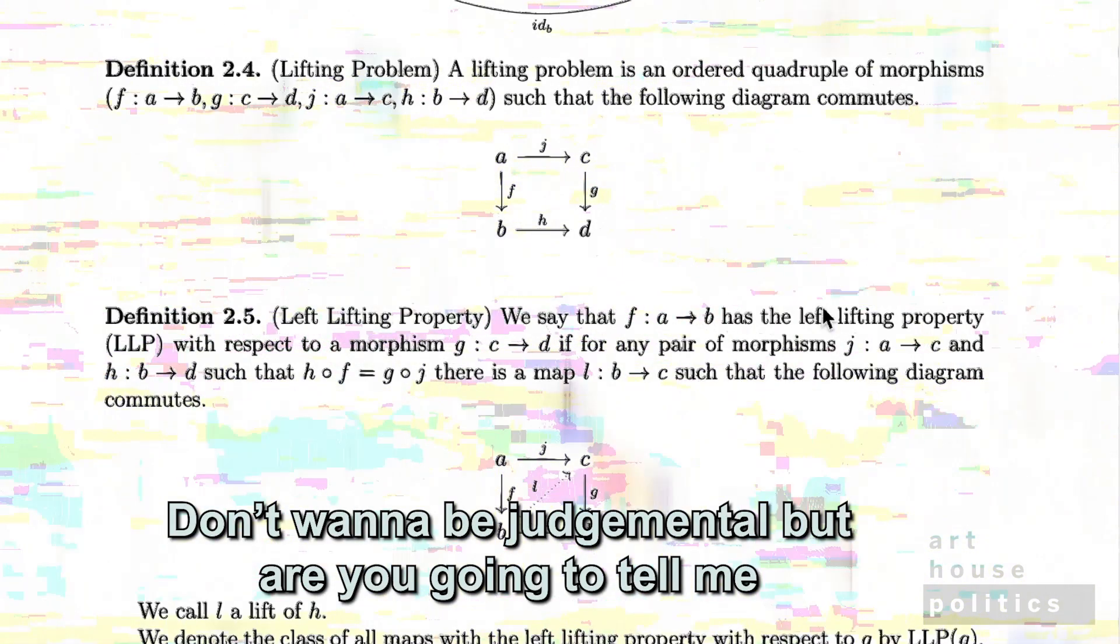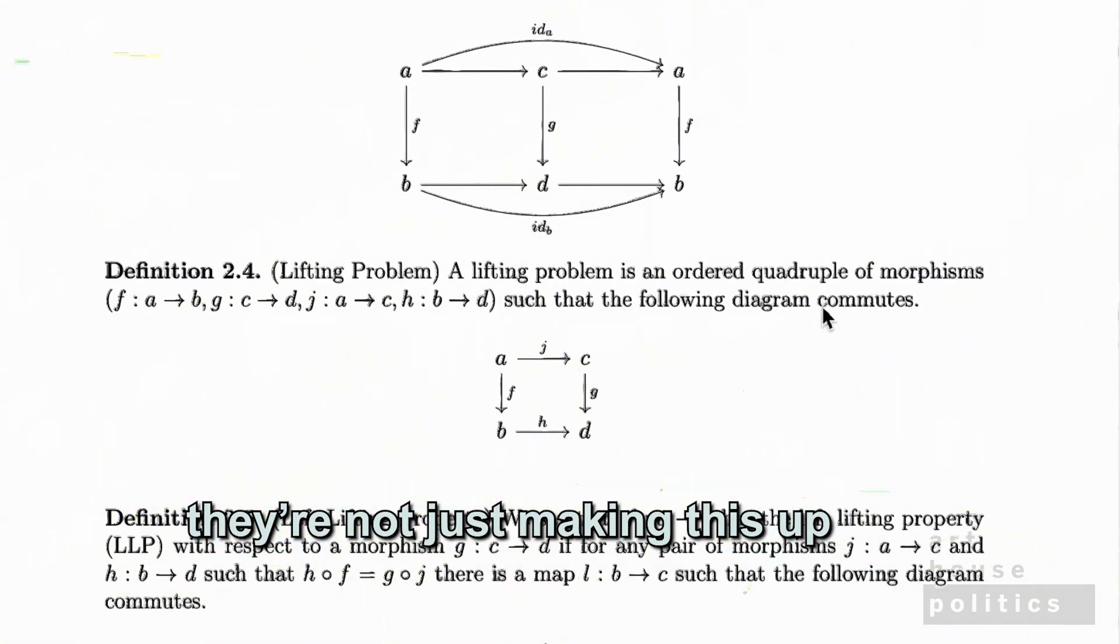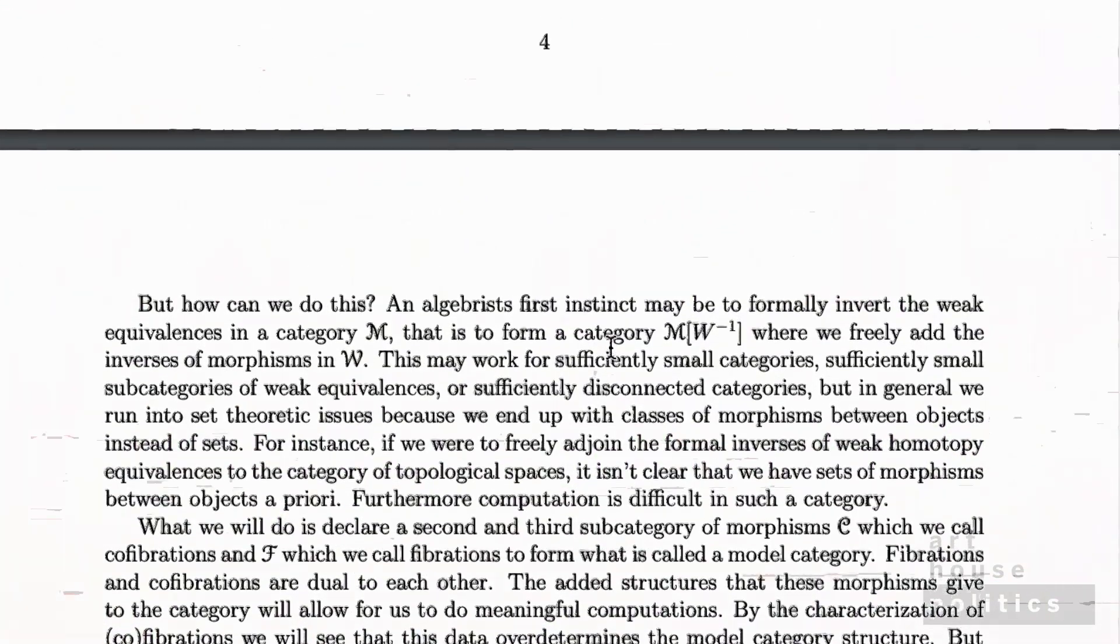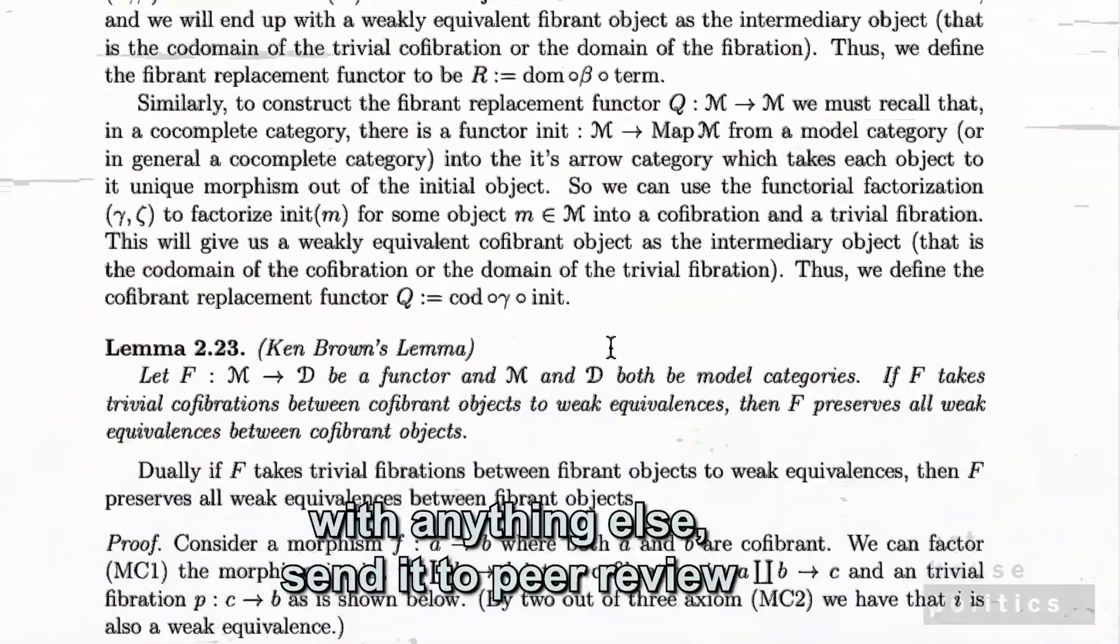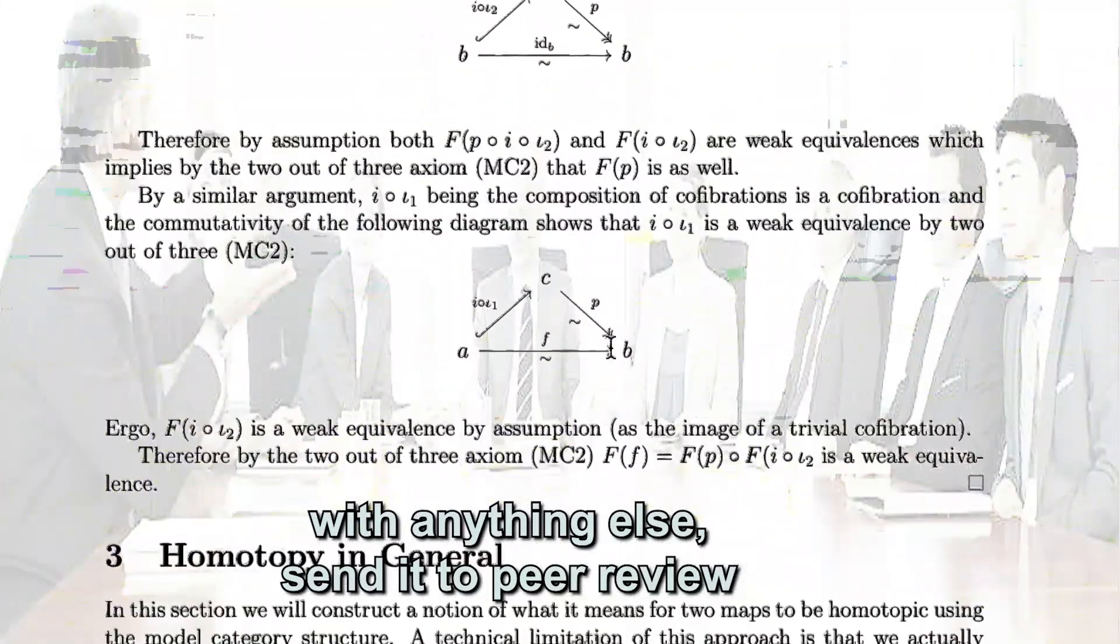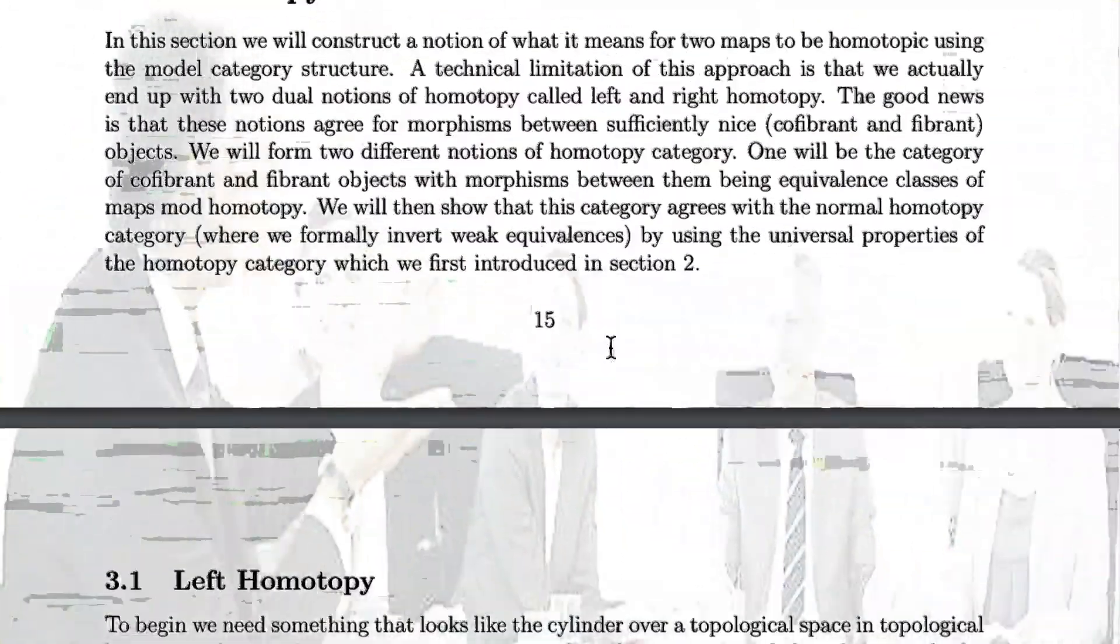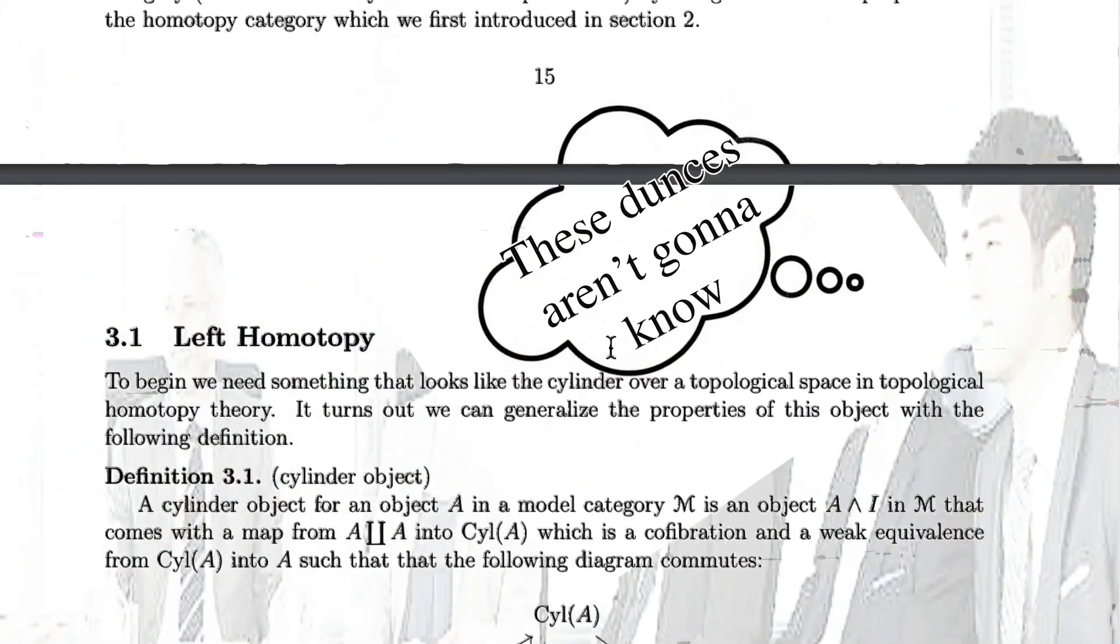I don't want to be judgmental, but are you going to tell me they're not just making this up as they go along? Control F, replace any of these symbols and letters and numbers with anything else. Send it to peer review. Oh, this looks, because they're thinking, these dunces aren't going to know.